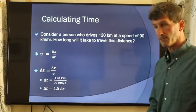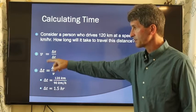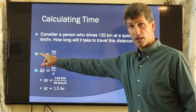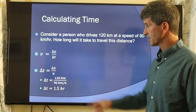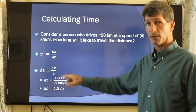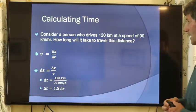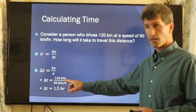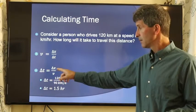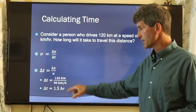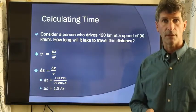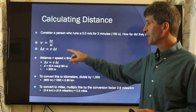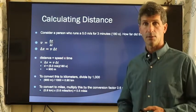What about calculating the time? What if I want to know how long it takes to go some distance traveling at a given speed? A little bit of algebra here. Multiply delta t to both sides, divide v from both sides, and we get a new equation. The time it takes to go some distance is the distance divided by the velocity. Consider a person who drives 120 kilometers at a speed of 90 kilometers per hour. How long will it take to travel this distance? 120 divided by 90 kilometers per hour. The kilometers cancel out, and we're left with 1.5 hours.